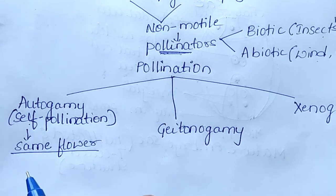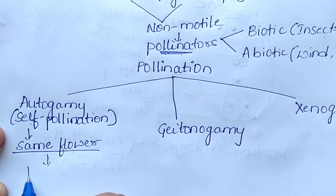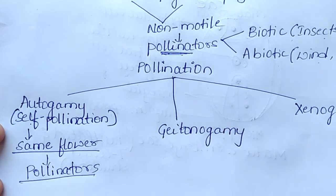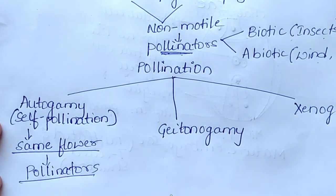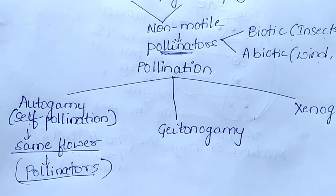The anther produces pollen grains that fall on the stigma of the same flower. Pollinators may be biotic or abiotic. In case of autogamy, pollination takes place within the same flower.